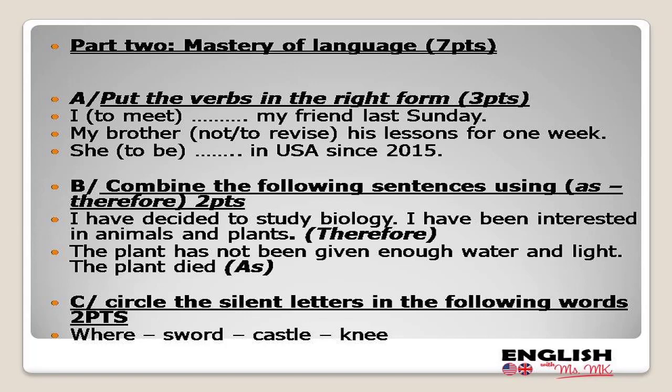We move now to the second part: mastery of language. The first activity is putting verbs in the right form according to the sentences. The second activity is combining sentences using 'as' and 'therefore' for results and cause. The last activity is circling the silent letters in words — this is the only pronunciation lesson mentioned in the new planning.